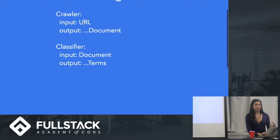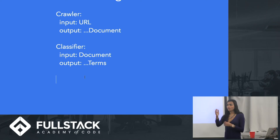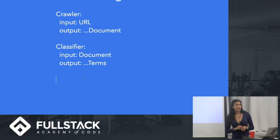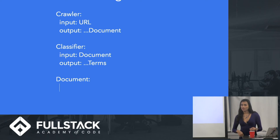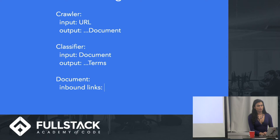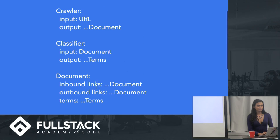So I have my crawler — I give it a URL to start, I get this bunch of documents, and I map the classifier over them. What I get out is a bunch of terms for each document. A document sort of retains that information — it has inbound links, which would be a bunch of documents, and outbound links, again a bunch of documents, and then probably a bunch of terms which get attached during the classification stage, and a URL. So that's probably what our document looks like.